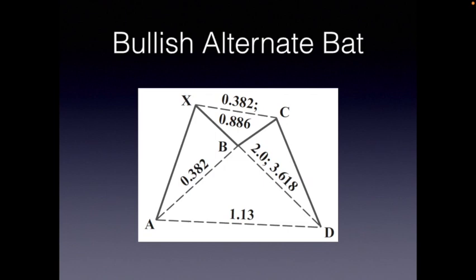That is going to pretty much do it for the bats. Look for the bearish alternate bat as well — it works both ways, exactly the same, just flipped over. I'll also put illustrations on the Discord server. If you have any questions or concerns, leave a comment below, join the Discord, pop in the chat, and we'll be happy to help you out. Thank you very much, hope this was informative, and you have a great day.